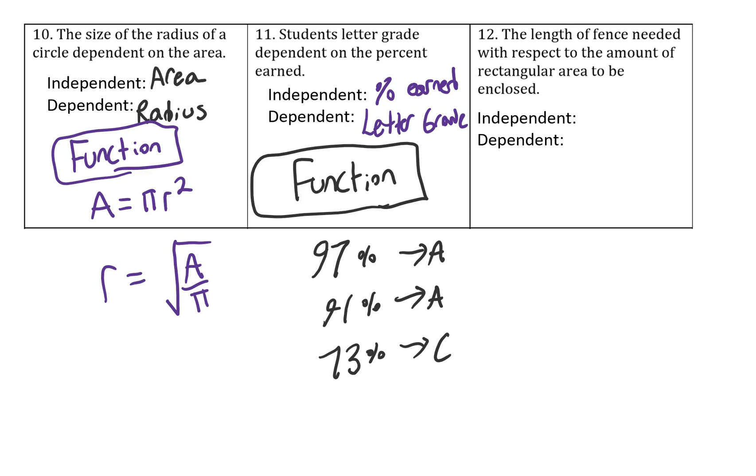And finally number 12, the length of fence needed with respect to the amount of rectangular area to be enclosed. So the length of fence needed is dependent and the independent is the amount of area. And so let's just think about that for a second. So I could have a rectangular fence that's three by four and the area would be 12 square units. And the total length of fence would be three plus three plus four plus four, which is 14.